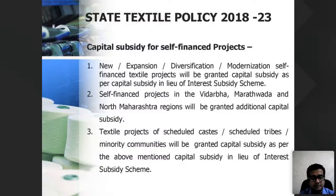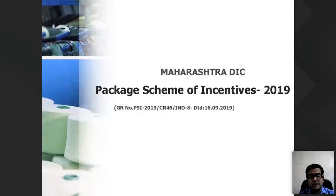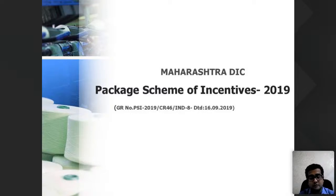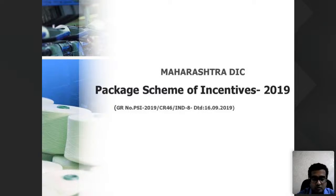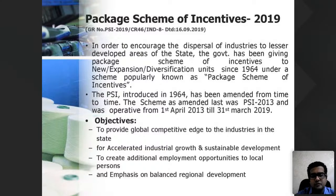Those were the central and state textile subsidies. But it doesn't end there — the Maharashtra DIC department also gives subsidy to textile units under the Package Scheme of Incentives, or PSI. Not only textiles but all manufacturing units are covered under PSI, with some exceptions. A person putting up a textile unit in Maharashtra can be eligible for all three: central ATUFS, state textile policy, and PSI.